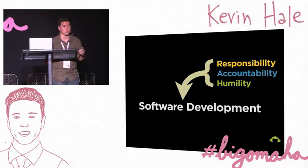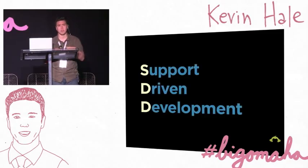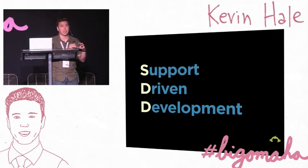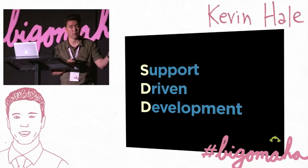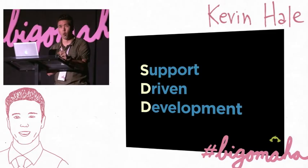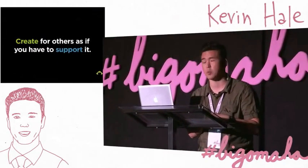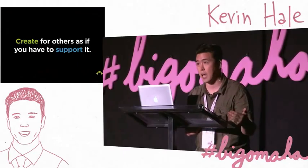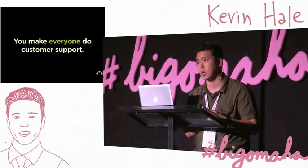We came up with a system to combat this called support-driven development. It's like test-driven development or agile practices — practices about writing code that keeps getting better with high quality. Support-driven development has one tenet, a variation of a very old one: the golden rule says 'do unto others as you wish others to do unto you.' In support-driven development: 'create for others as if you have to support it.' The way you make this happen is very simple — no scrum, no agile practices, no crazy note-taking system. All you have to do is make everyone do customer support.